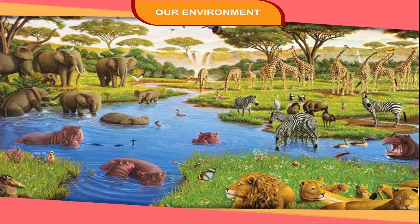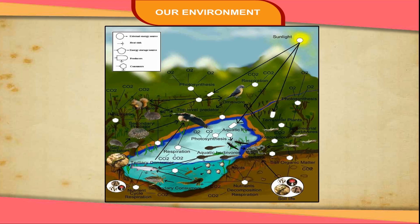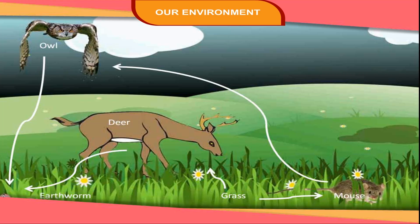Both components of environment, i.e. abiotic and biotic, are inseparable. Geography studies the interrelationship between living organisms and the environment. Moreover, these components of environment are not static. They are always changing because of various processes. However, these changes may be slow as well as sudden.